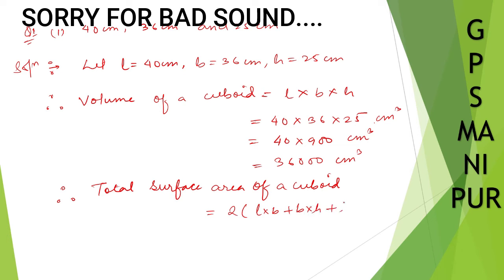Let us replace there with these numbers. L into b, so length times breadth is 40 times 36, plus breadth times height is 36 times 25,